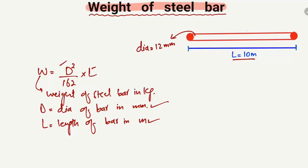We have a steel bar with a diameter of 12 millimeters and a length of 10 meters, and we want to find the weight. So W = D² / 162 × L. The diameter D is 12 millimeters, so it will be 12² divided by 162 — where 162 is a constant — multiplied by the length L, which is 10 meters.